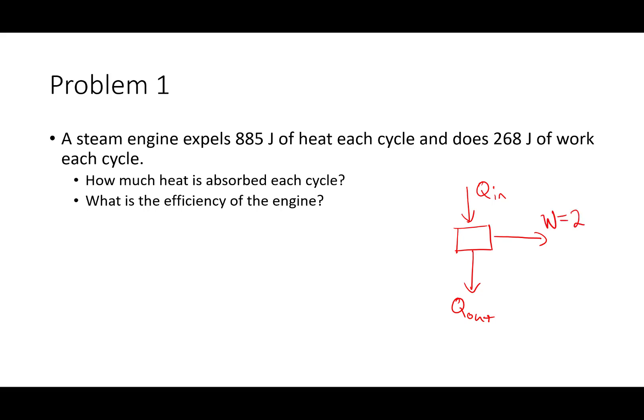It tells us how much work is done, 268 joules. We know that 885 joules of heat are expelled, so that's Q out, 885. And we can actually use this diagram to find the input. Because the total energy in has to equal the total energy out, we just add up work plus Q out to get Q in. So that's 268 plus 885 joules. Q in is going to be 1153 joules.